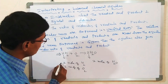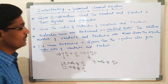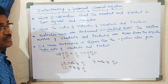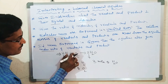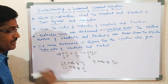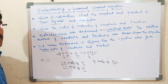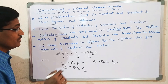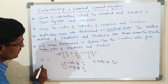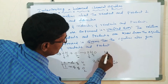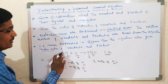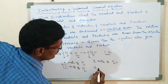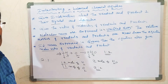These coefficients — 2, 1, and 2 — show the molar ratio. If you compare H₂ and O₂, the ratio is 2:1. If you compare O₂ and H₂O, the ratio is 1:2. If you compare H₂ and H₂O, the ratio is 2:2. This is what we call the molar ratio.